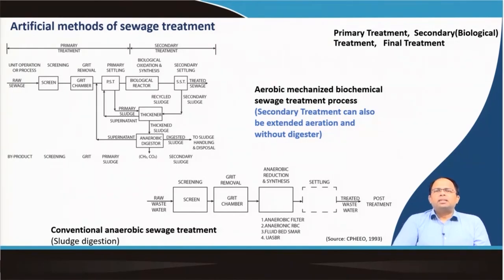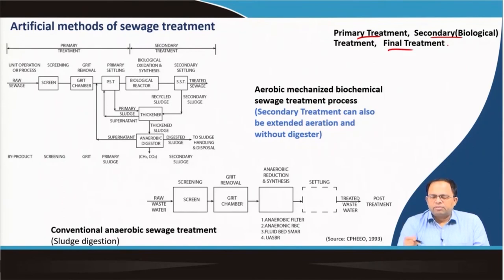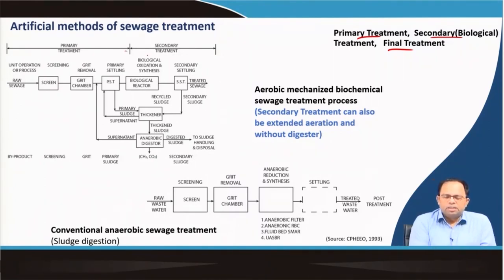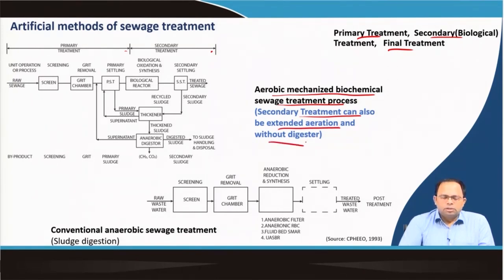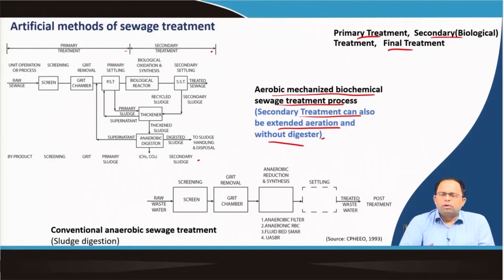Overall, sewage can be treated by various combinations of processes, including primary treatment, secondary or biological treatment, and final treatment. The arrangement is decided based on the type of sewage, space availability, cost, and quality of discharge intended. Secondary treatment can be directly applied after grit removal. We can use variations of the same system, and this has to be determined based on the type of sewage and the overall arrangement of treatment units.